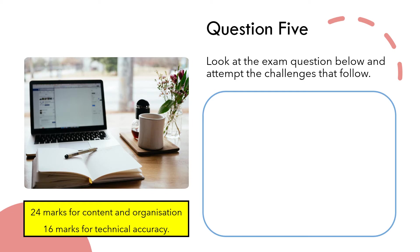The 24 marks for content and organisation: 'content' means are you using successful techniques that create imagery and grab the reader's attention, and 'organisation' covers your sentence structures, paragraphing, and whether you're embedding the structural techniques from paper one. The 16 marks for technical accuracy — often neglected — cover your spelling, grammar, and punctuation. We have videos on our YouTube channel going into those in more detail, particularly punctuation, which is an easy way to boost your marks.